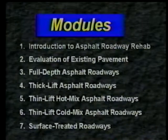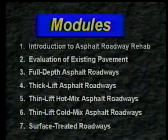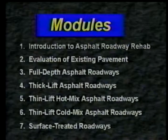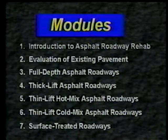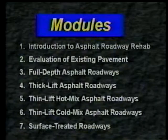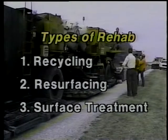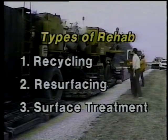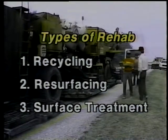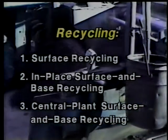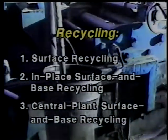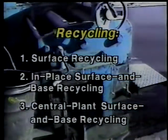Agencies have the option of choosing which of seven modules to cover based on the type of roadways in the locality. Each module addresses issues unique to rehabilitating each road type, as well as the advantages and disadvantages associated with each method's application. Three primary types of road rehab are covered: recycling, resurfacing, and surface treatment. Recycling covers surface recycling, in-place surface and base recycling, and central plant surface and base recycling.